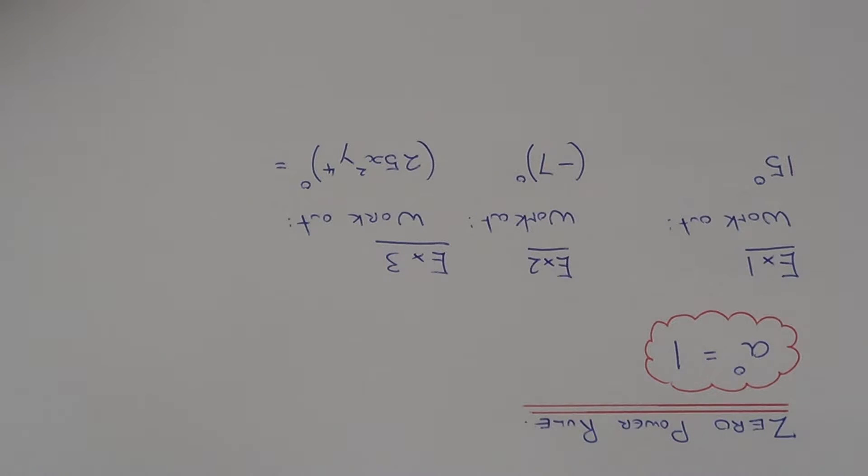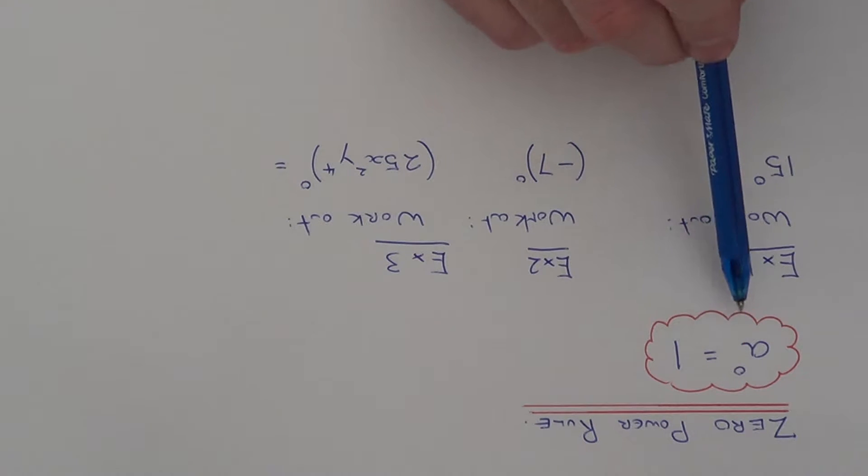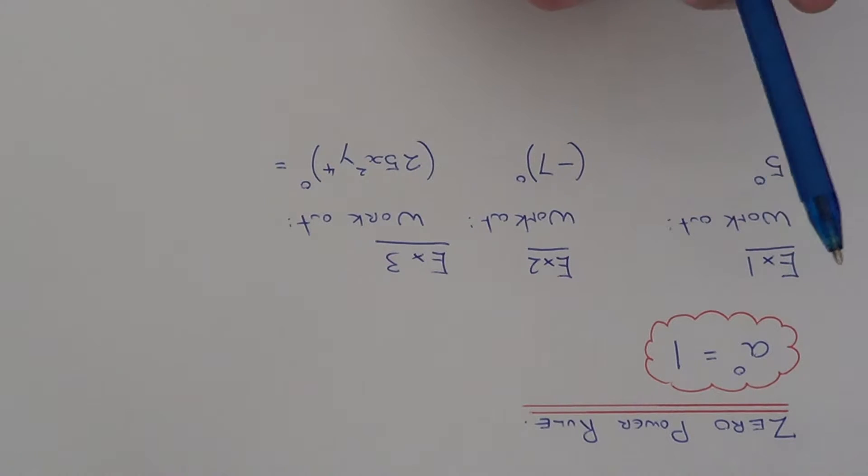Any number or expression which is raised to the power of zero will always give you an answer of one. So no matter what you've got, if it's power of zero, it will just be one, the answer.